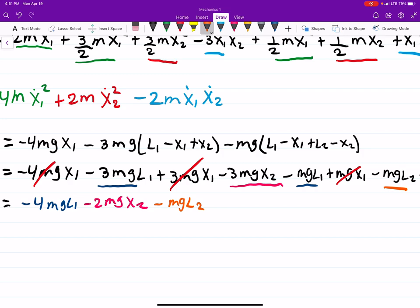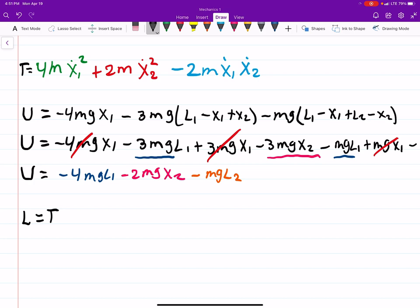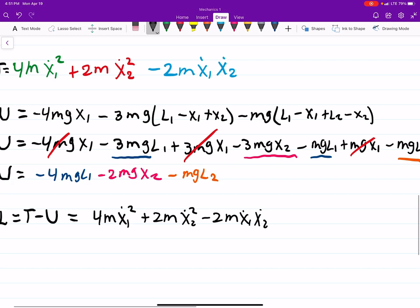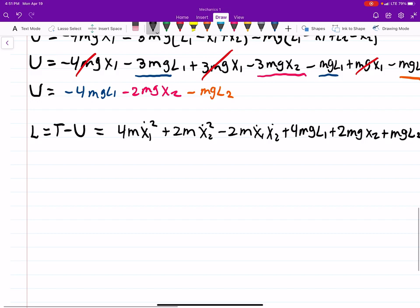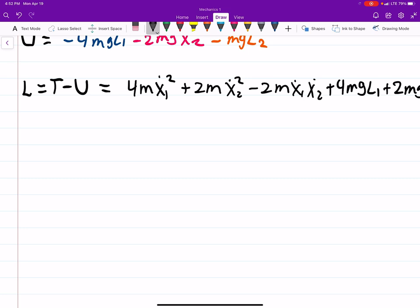So we have our potential energy pretty well simplified along with our kinetic energy. And now we can find our Lagrangian which is just kinetic minus potential. So kinetic is 4m x1 dot squared plus 2m x2 dot squared minus 2m x1 dot times x2 dot so this is minus so actually this will be plus 4m g L1 plus 2 mg x2 plus mg L2. So I don't think there's much we can really combine here so we'll just get right into the Euler-Lagrangian.